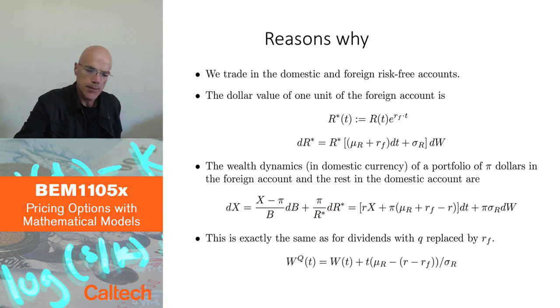So π over R*, number of shares, number of units of the foreign, in the foreign bank account, times dR*, change in the foreign bank account. And just replace dB by r dt, you replace, so r is the domestic rate. You replace the dR* over R* from here by μ_R + r_F dt + σ_R dW, and you get this. And this is exactly the same as for a stock paying dividends, except instead of the dividend rate, which we call small q, here we have r_F, the foreign bank interest rate.